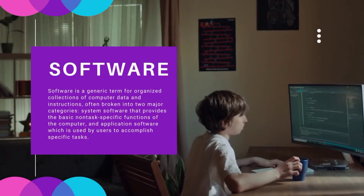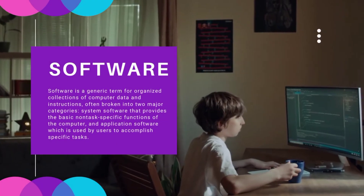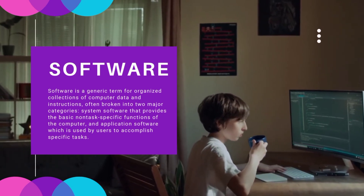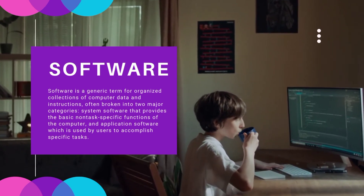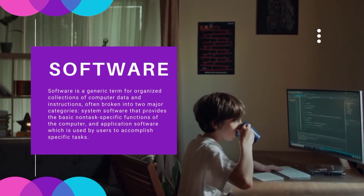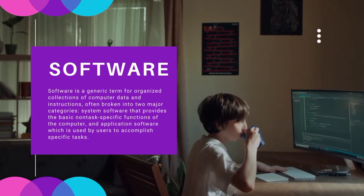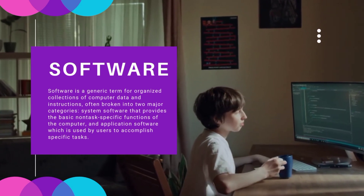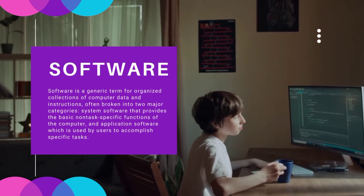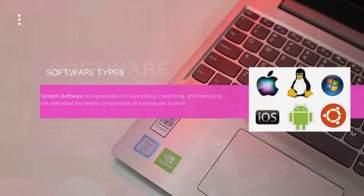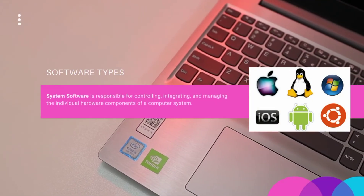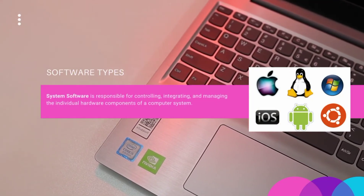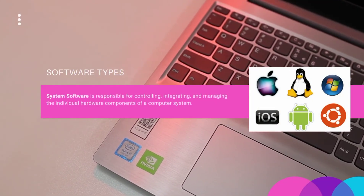The other component of a computer is software. Software is a generic term for an organized collection of computer data and instructions, often broken into two major categories: system software, which provides the basic non-task-specific functions of the computer, and application software.